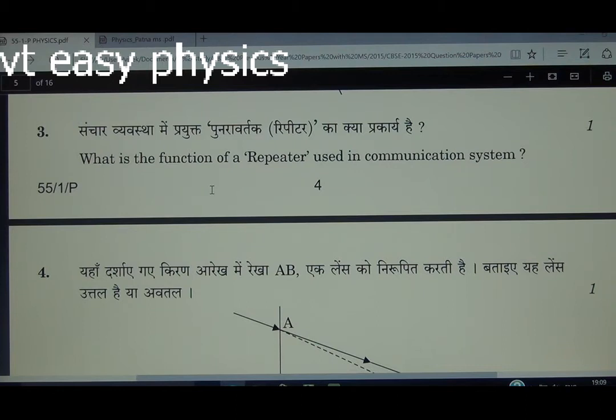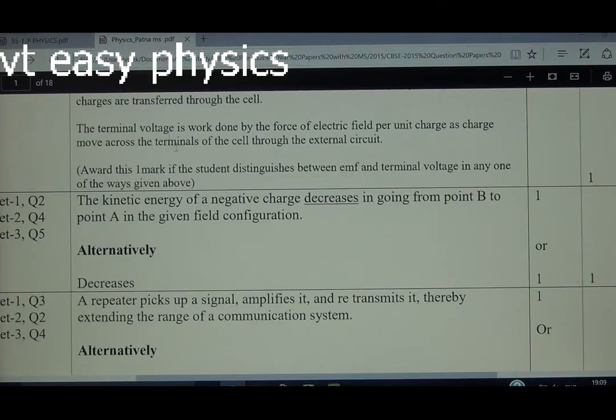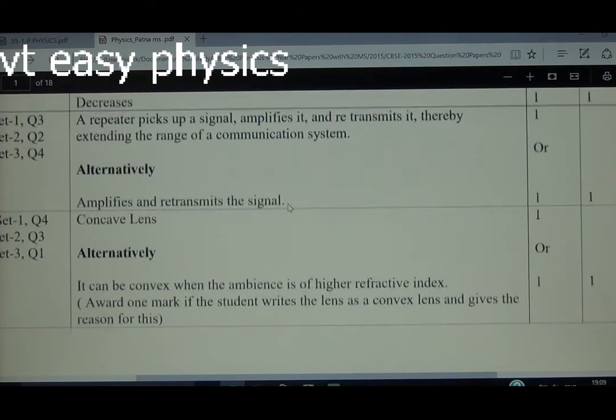The function of a repeater is to receive the signal and to amplify it and re-transmit it. Basically it is used to increase the range. Answer given: repeater picks up signal, amplifies and re-transmits it, thereby extending the range of communication system.